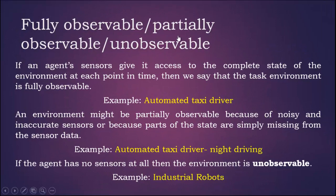What is fully observable, partially observable, and unobservable? If an agent's sensors give it access to the complete state of the environment at each point in time, then we say that the task environment is fully observable. An example of a fully observable task environment is an automated taxi driver.